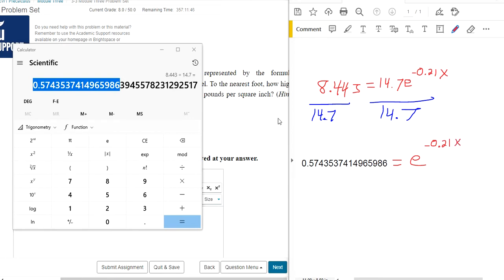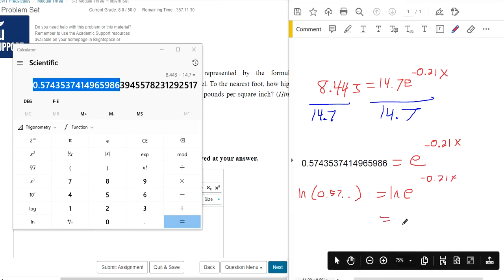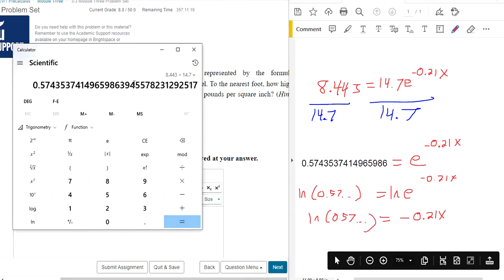Next, to get X out of the exponent position, we're going to take a natural log of both sides. And we use natural log because a natural log is a logarithm of base E. If you take a natural log of E, it cancels out and leaves you with just negative 0.21X. Okay? So that's the whole reason we did that. I'm just not writing all the decimals because it's hard to write with this thing.